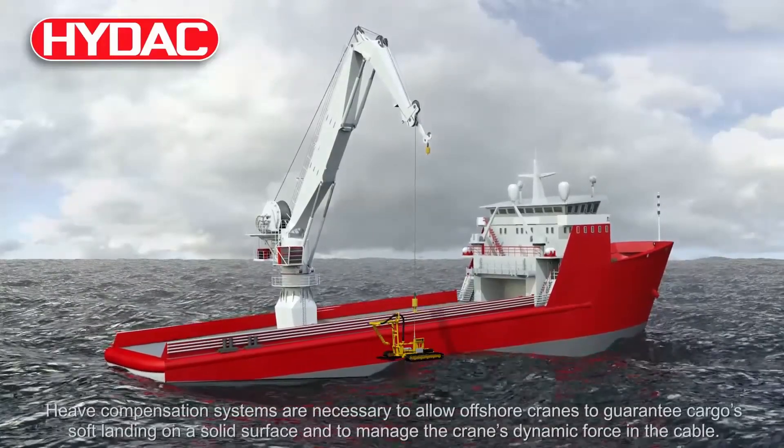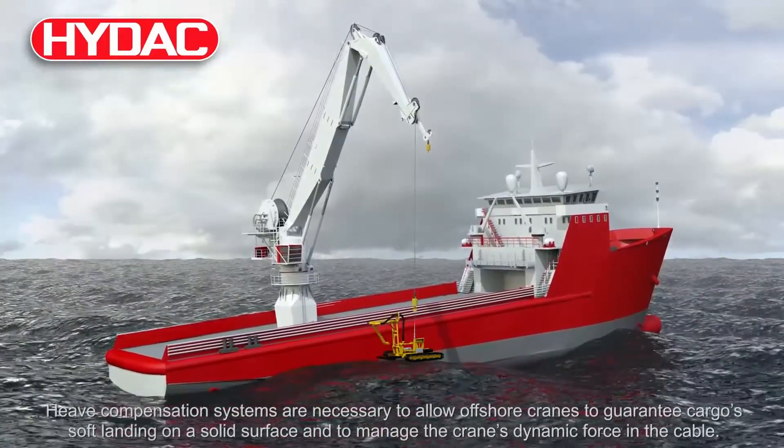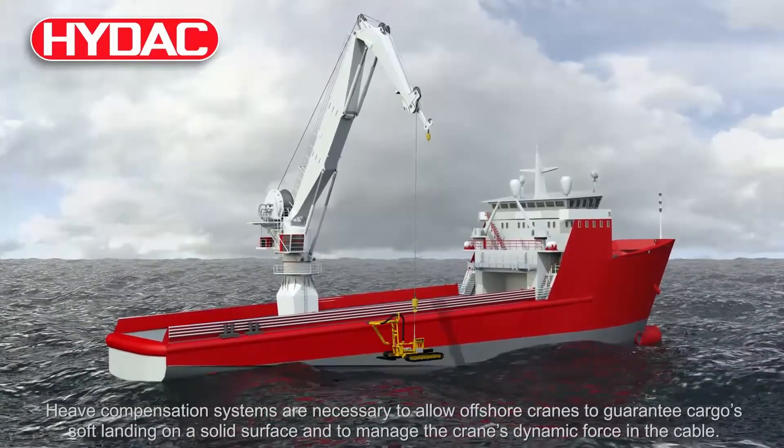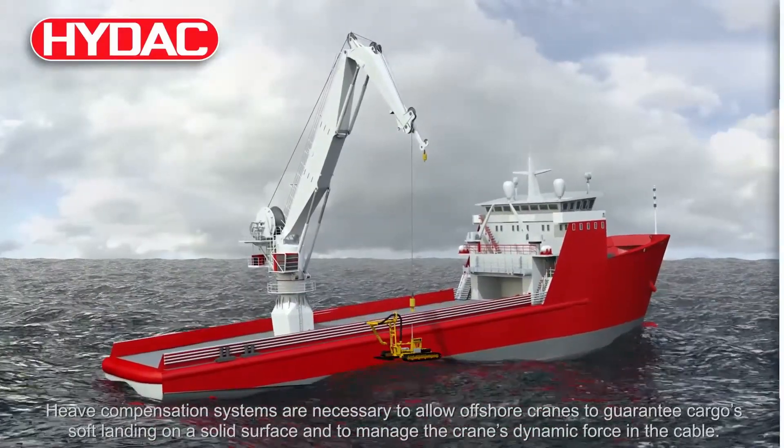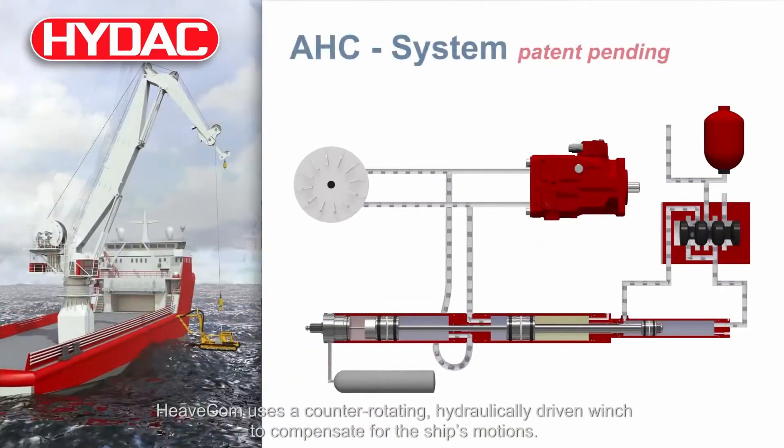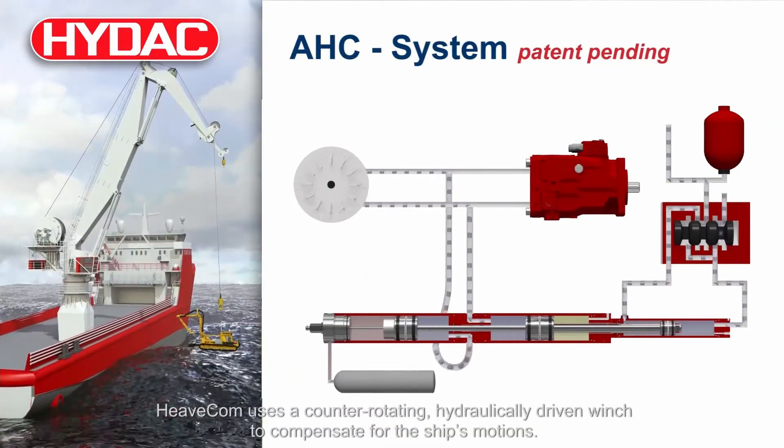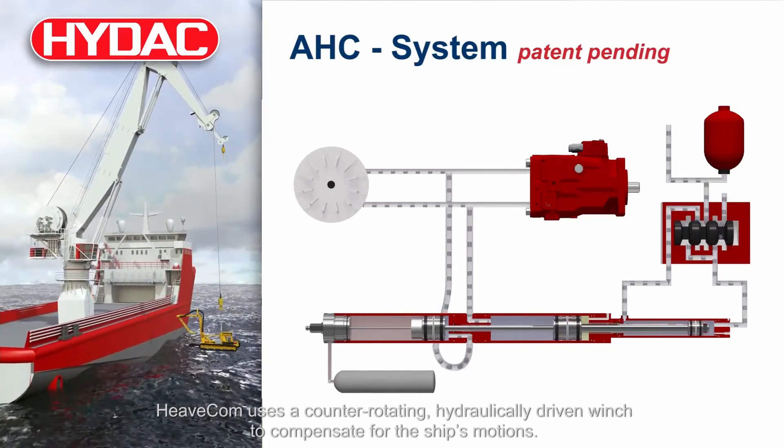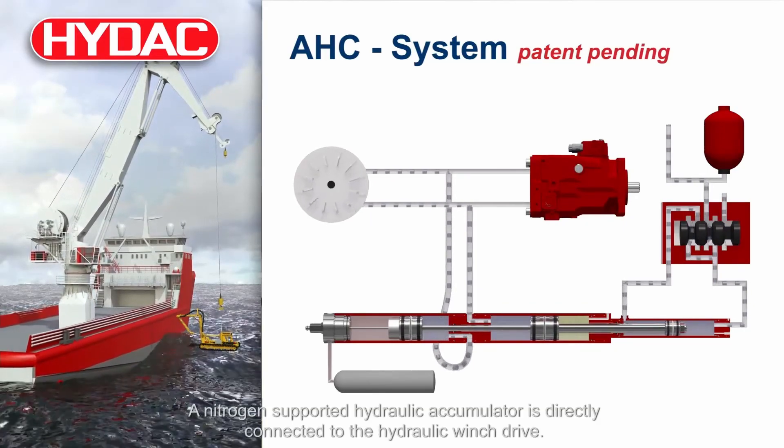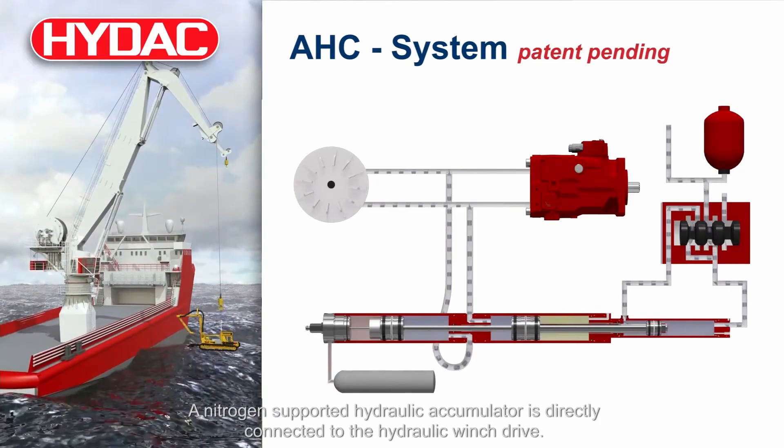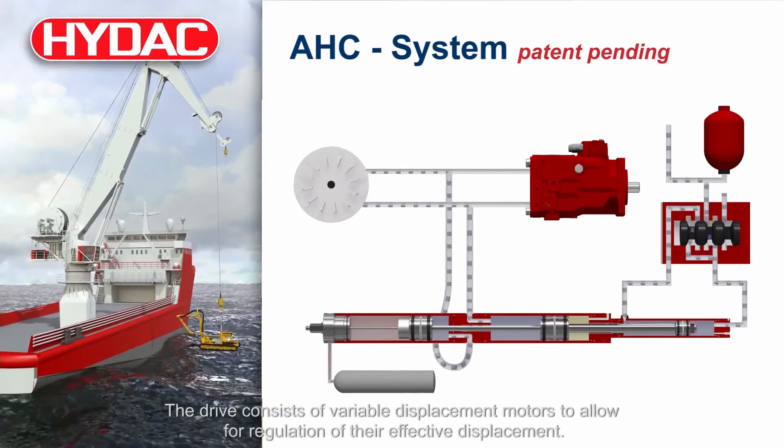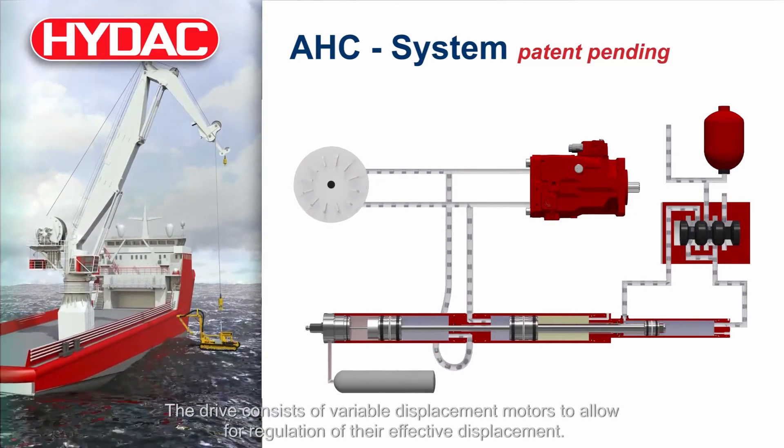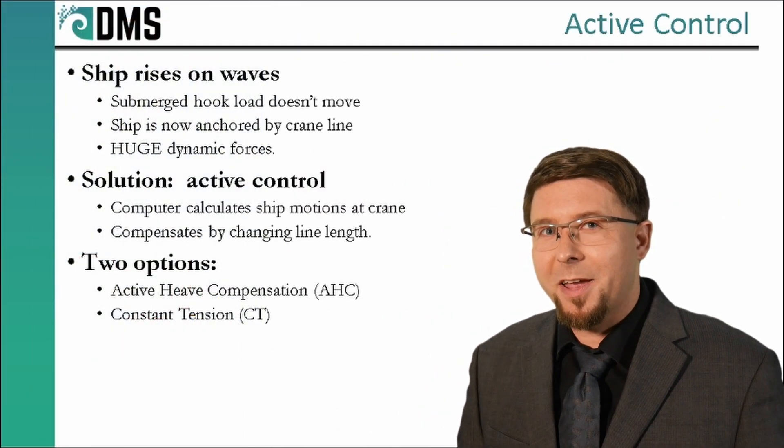The computer then compensates for that motion by automatically adjusting the line length. If the boom tip is rising 1.2 meters, huge hydraulic systems will kick in and very quickly pay out another 1.2 meters of crane line. This is not easy. It requires fast, powerful hydraulics and a complicated control system where our computer is basically predicting the future. Or at least for a very short time into the future.